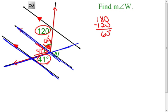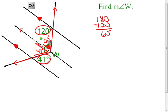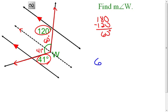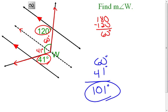Now let me get rid of all the blue and the extra lines. I can see that my angle W is made up of a 41 degree angle and a 60 degree angle. All I have to do is add those two angles together: 60 degrees plus 41 degrees means the measure of angle W is 101 degrees.